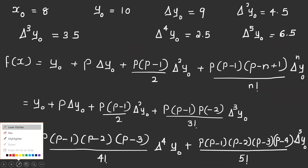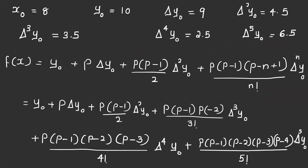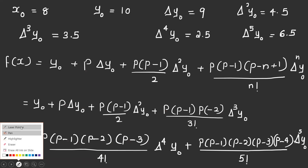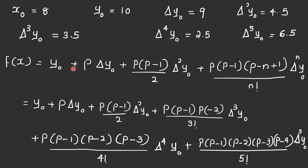f(x) = y₀ + p·Δy₀ + p(p-1)/2! ·Δ²y₀ + p(p-1)(p-2)/3! ·Δ³y₀ + ... up to the 5th difference term. This is the general forward interpolation formula.